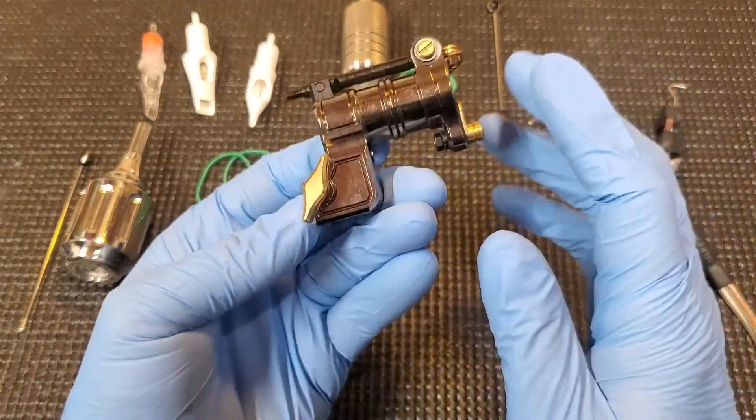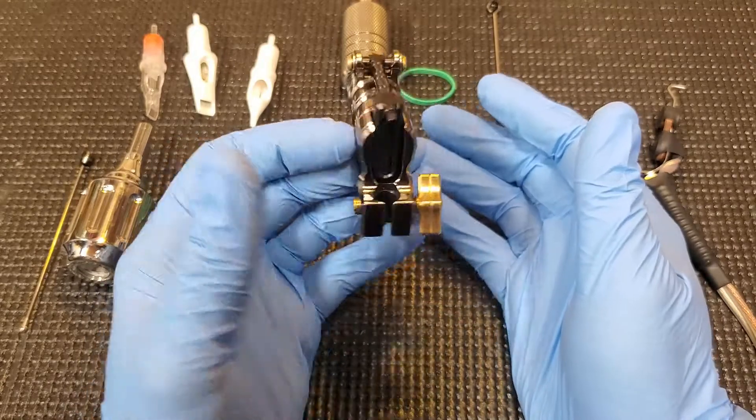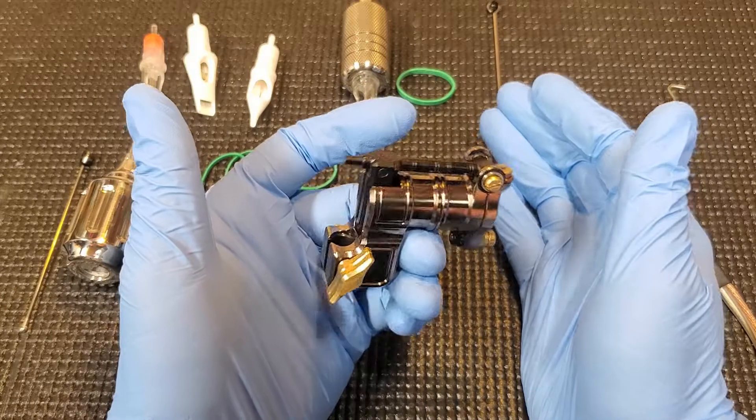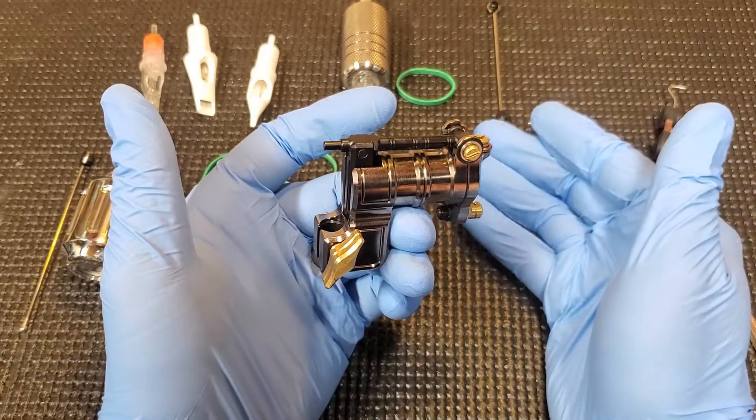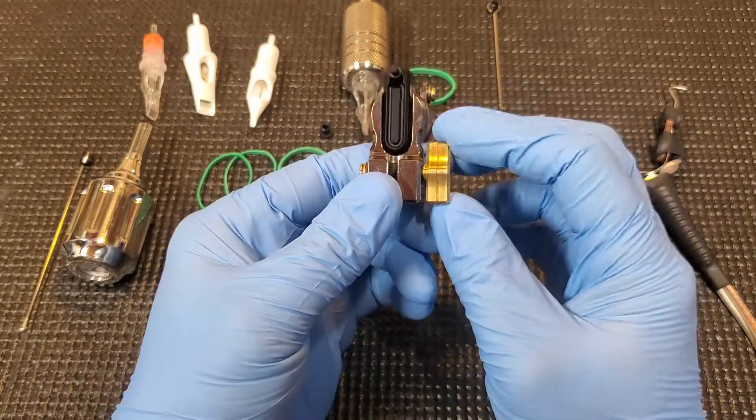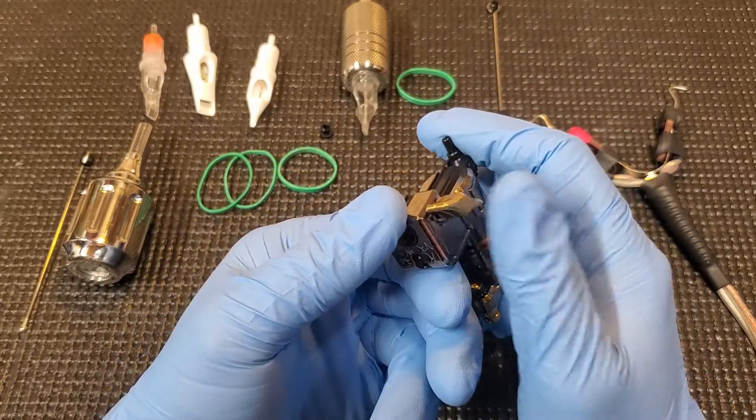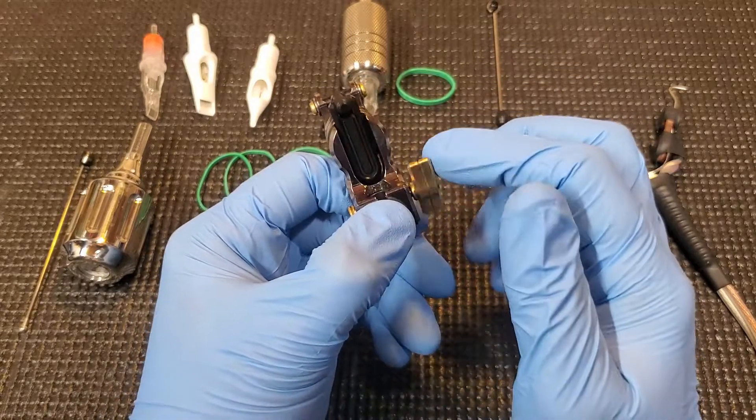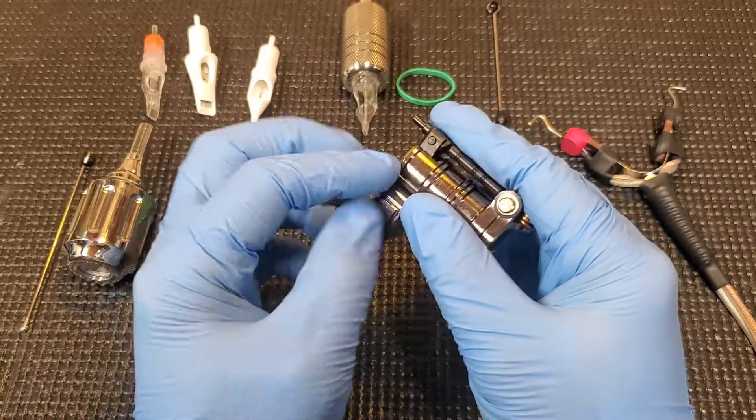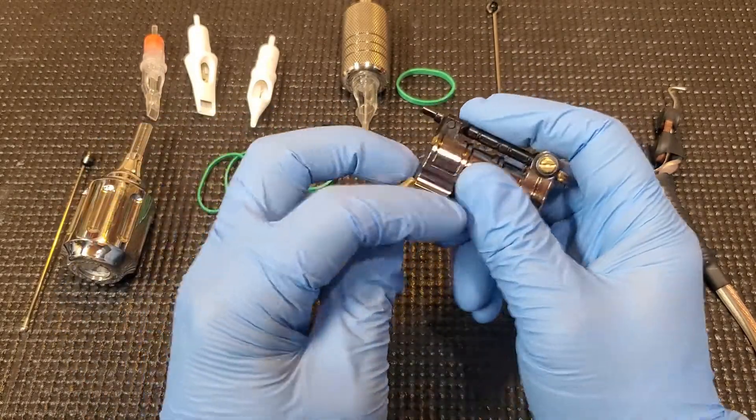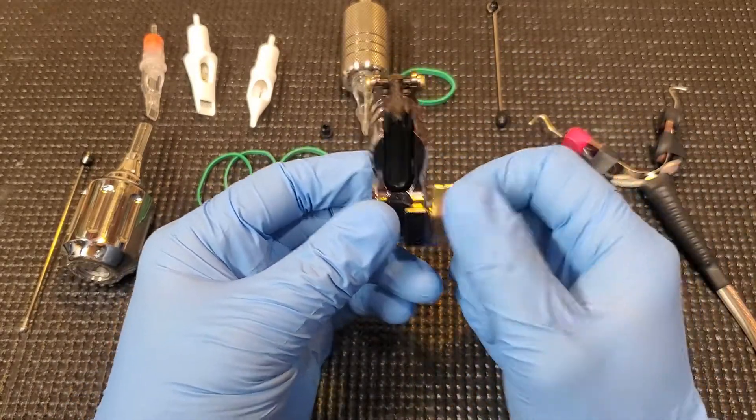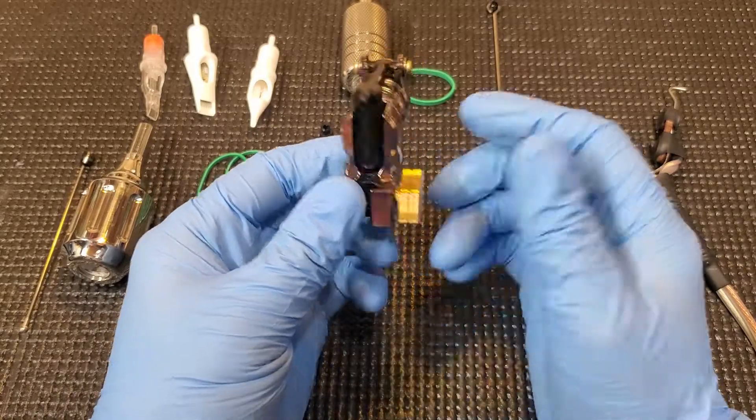As far as ergonomics go, I feel like it's a fairly balanced machine. A lot of that weight does stay forward over the hand when you're tattooing. I really do like the screw that's used on the vise. I prefer these just because they're easier to clean. I like being able to just grab that and go.